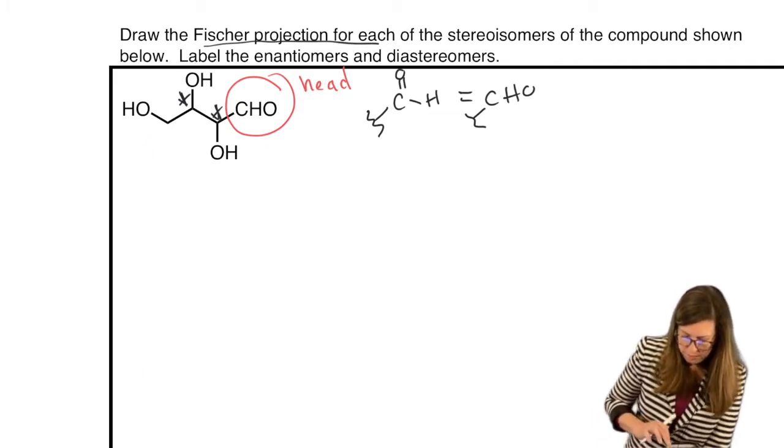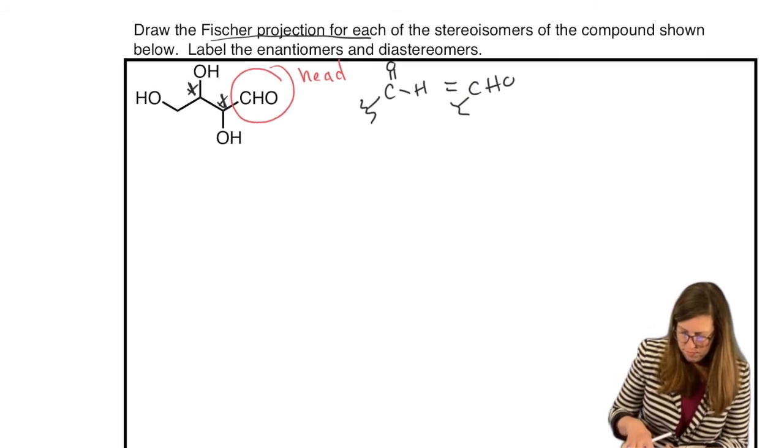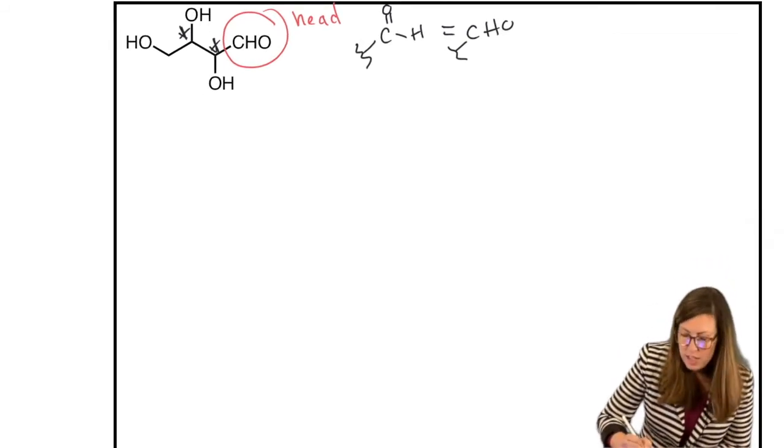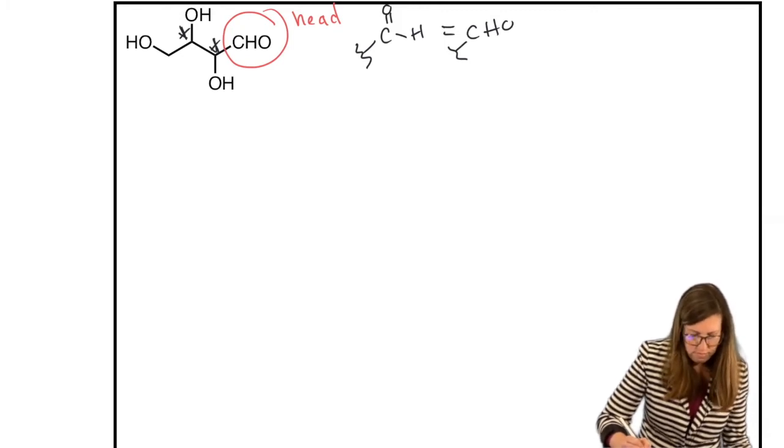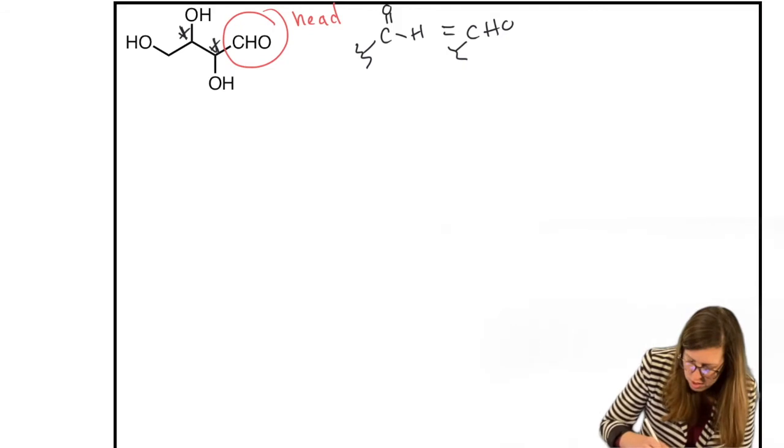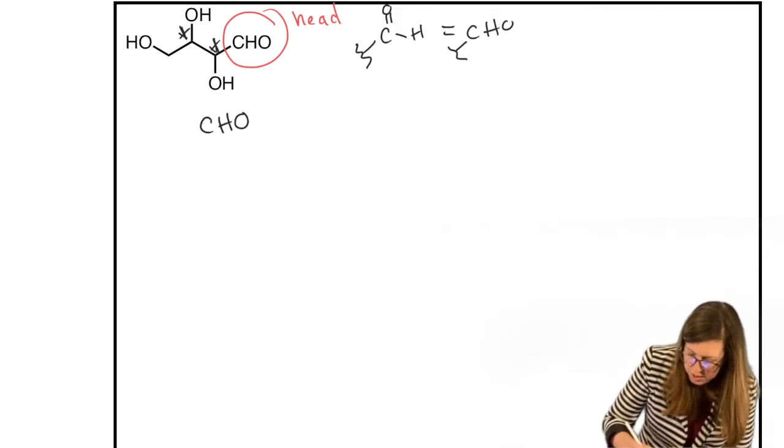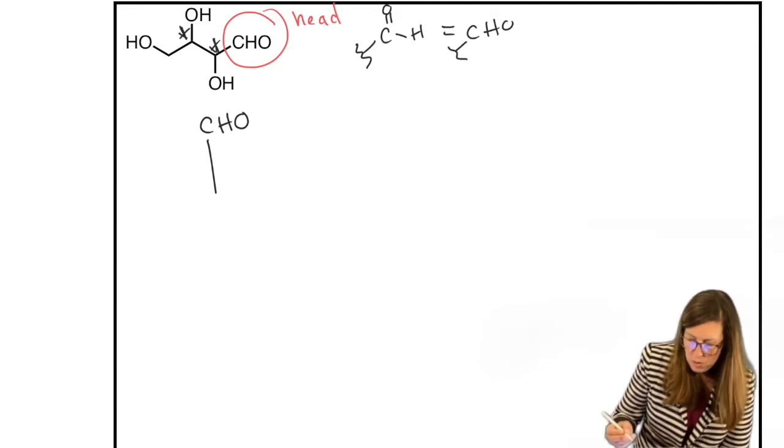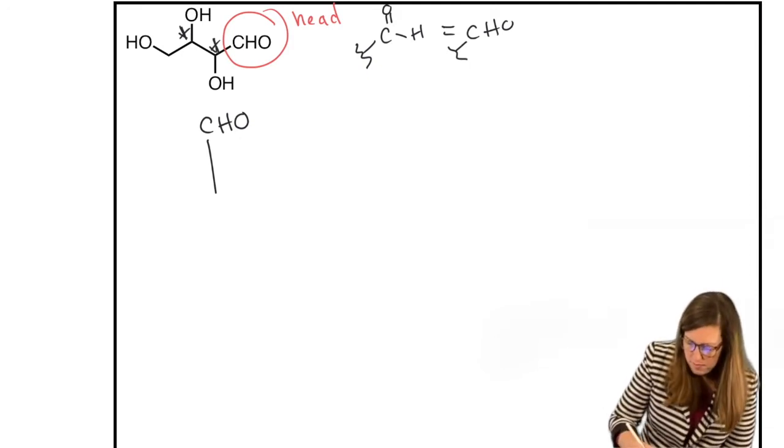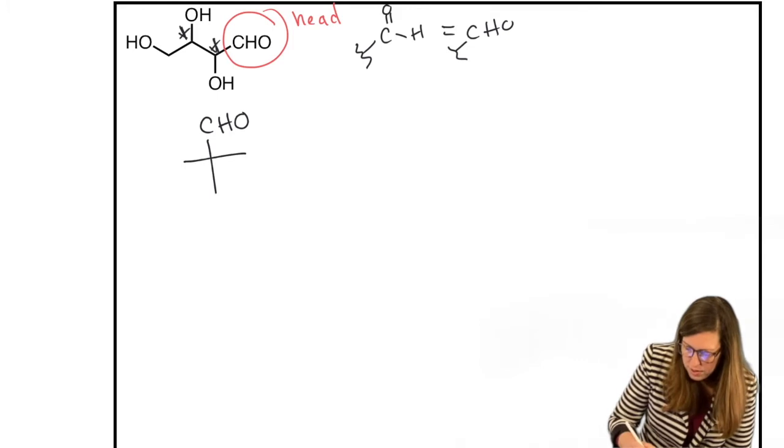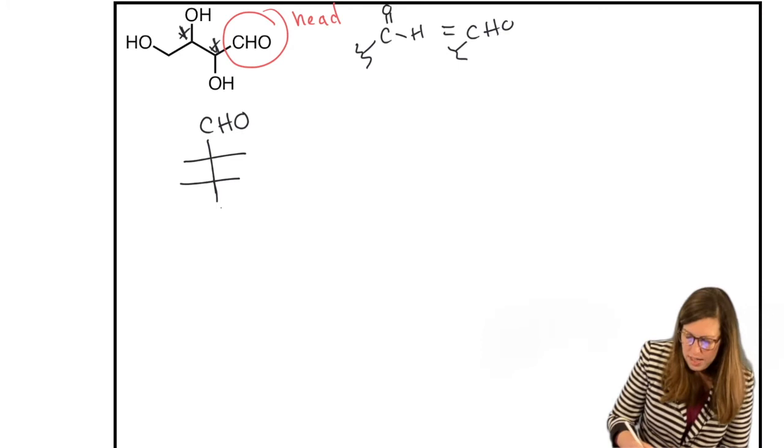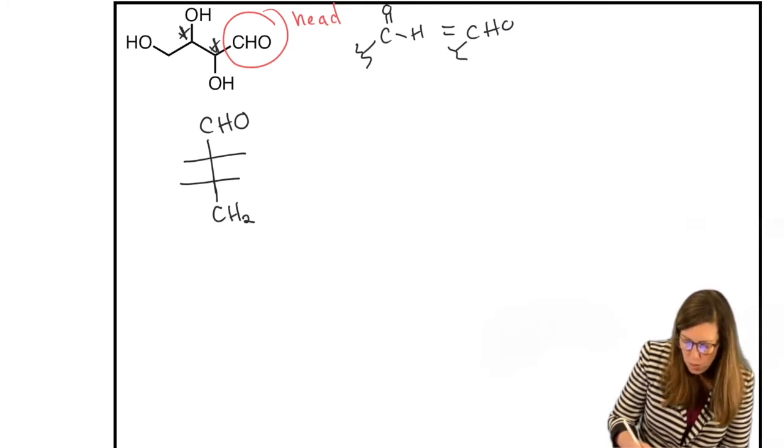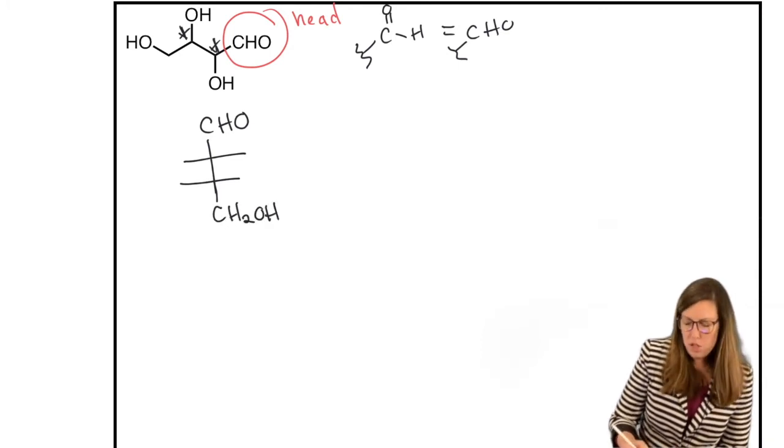So let's start drawing. So each of the stereoisomers, let's draw them all. Start with all the possibilities, but we're doing them in Fischer projection style now. We're not doing dashes and wedges. We're going straight to Fischer. So we have two horizontal lines because we have two stereocenters and then no line for the CH2OH because that is not a stereocenter. But I'll just draw out CH2OH.